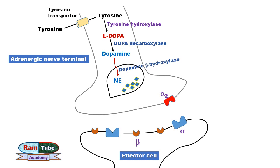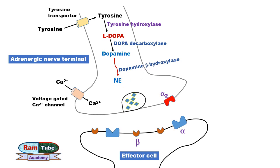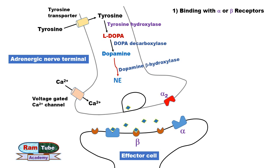When an action potential arrives at the nerve terminal, it opens the voltage-gated calcium channels and allows the entry of calcium ions inside the nerve terminal. The increased level of calcium causes fusion of vesicles with the membrane, and by the process of exocytosis, norepinephrine is released into the synapse.